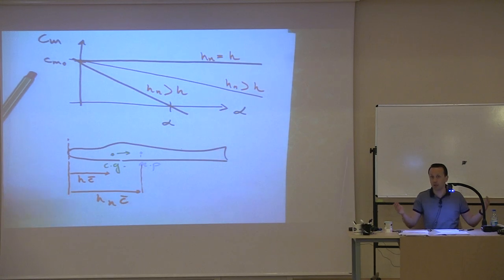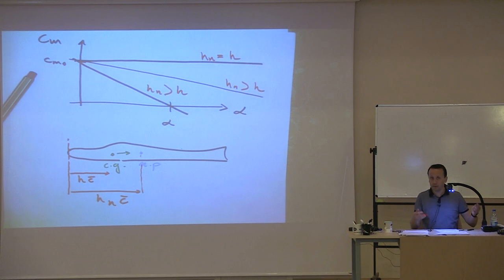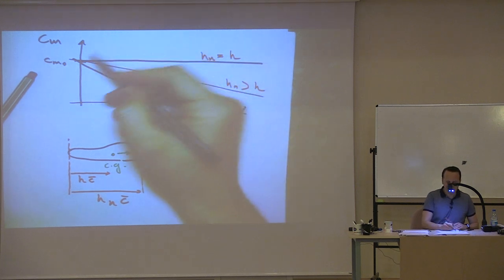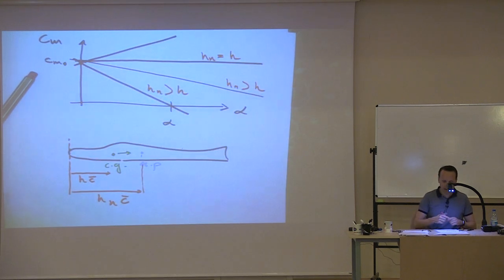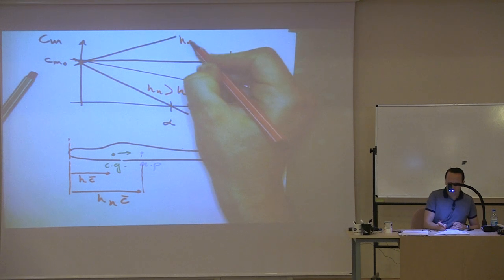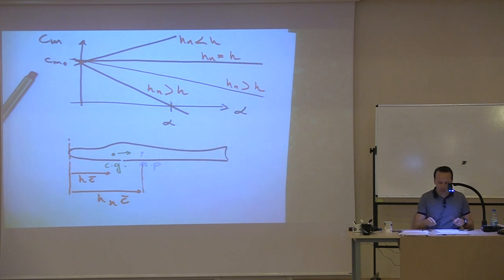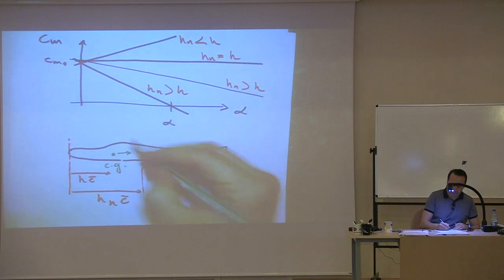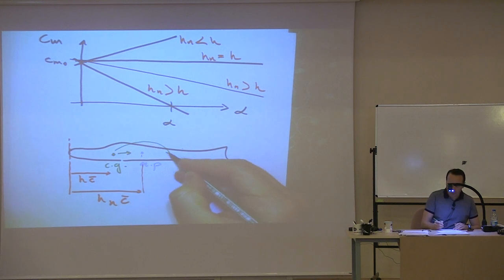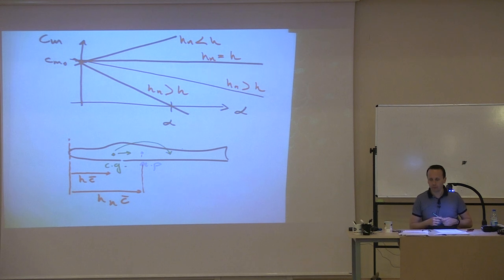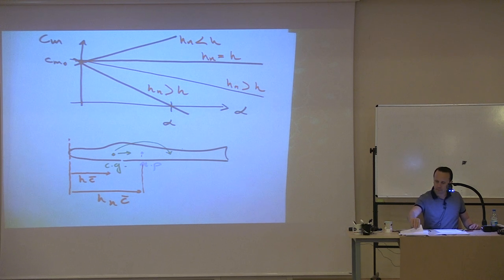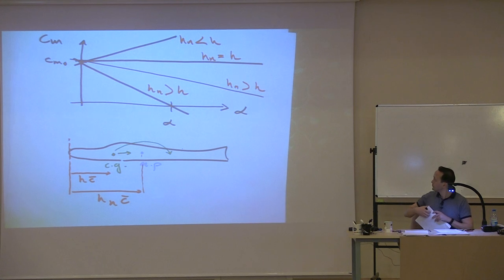If CM_alpha equals zero, a change in alpha means CM does not change. If HN is less than H, the CG has actually moved all the way to the back, giving an unstable condition.